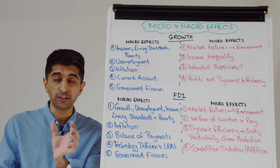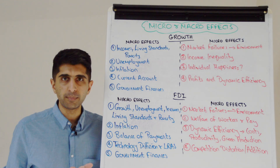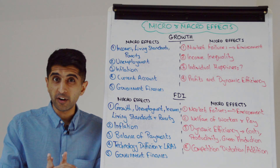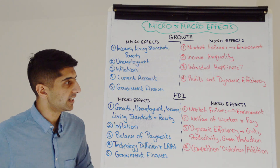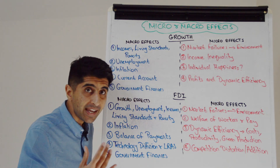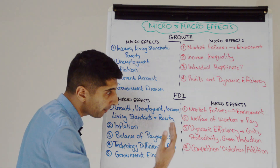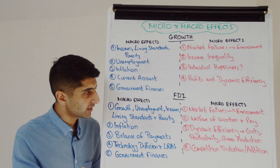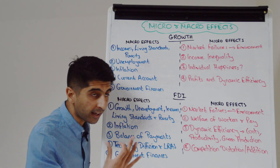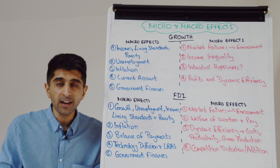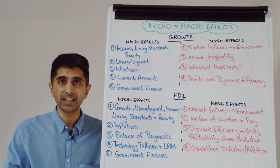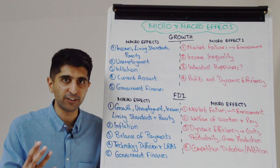What about the micro effects of FDI? We can again focus on the environmental concerns — the negative externalities, the market failure, therefore, of resource depletion, of air pollution, etc. We can talk about how these foreign firms are treating their workers — are they exploiting them with very poor conditions? Are they not giving things like maternity leave, paternity leave? Are they firing very quickly? Are they bringing their own workers and therefore hurting domestic workers and their welfare? Are they paying domestic workers very low wages? We can talk about dynamic efficiency in a micro context and lower costs, higher productivity. We can even talk about potential reinvestment in green production, sustainable production. We can talk about potential competition distortion — foreign firms coming in and destroying existing firms in a developing country. But also we can talk about how foreign firms may come in and add to competition, giving competition benefits, more competitive outcomes and static efficiency benefits too.